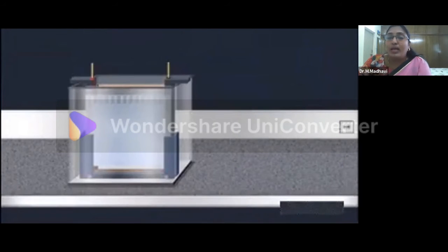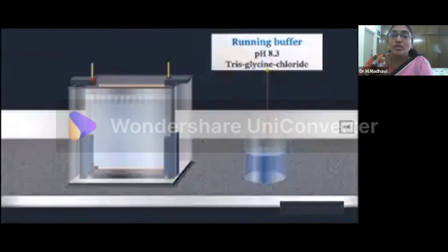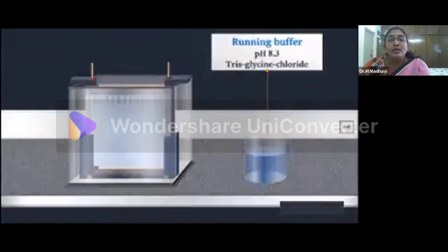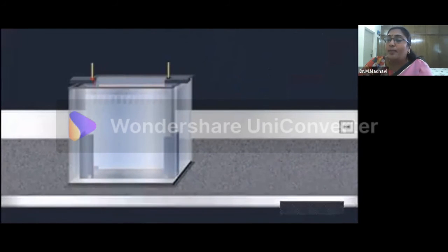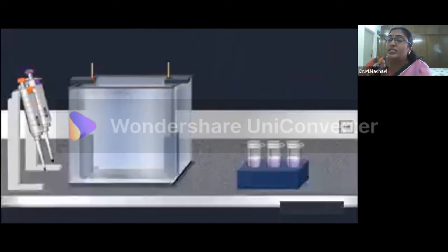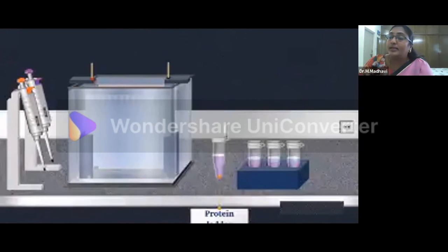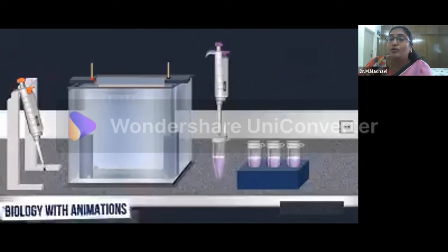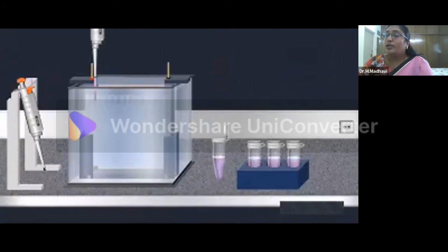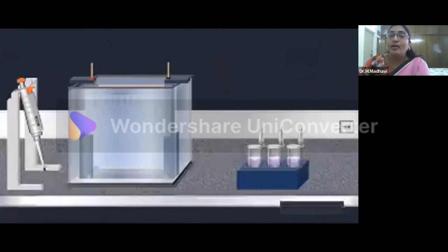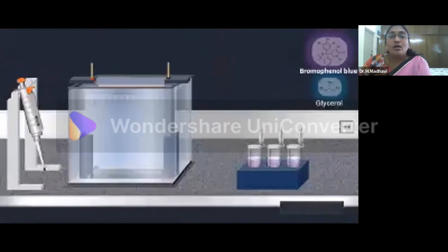The two basic types of materials used to make gel are agarose and polyacrylamide. The pore size of the gel may be varied to produce different molecular sieving effects for separating proteins of different sizes.